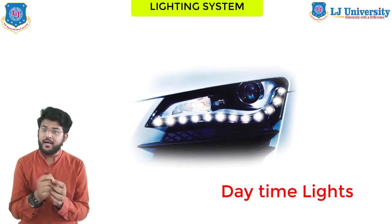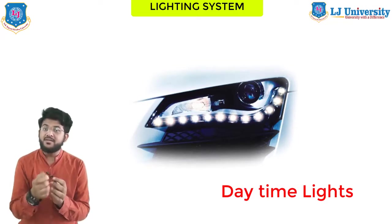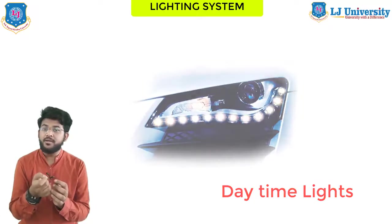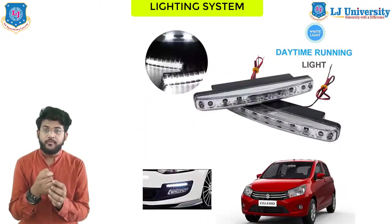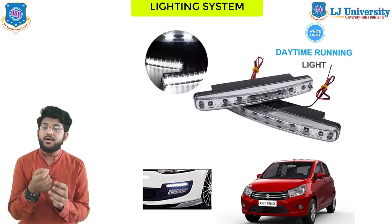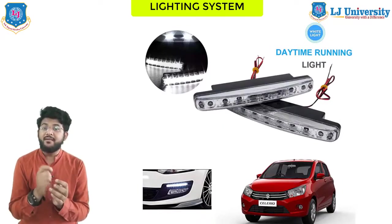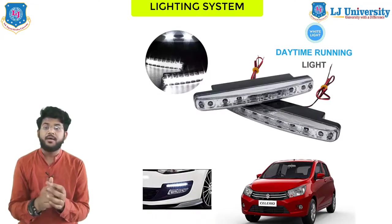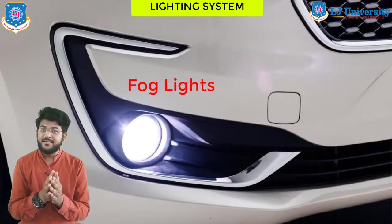Next are daytime running lights. These lights are located at both the front and rear of the car and generally turn on automatically, although in some cars you do not have the option to turn them off. They are designed to make you more visible to other vehicles, but some drivers find them distracting in oncoming cars.